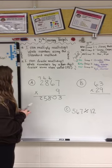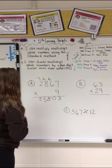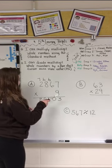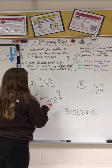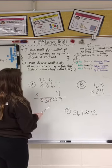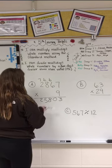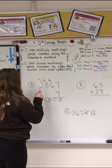So how I got this problem is with the standard method, which you would just do 9 times 7, which is 63, and then you would carry your 6. And then you would do 9 times 8, carry your 6.